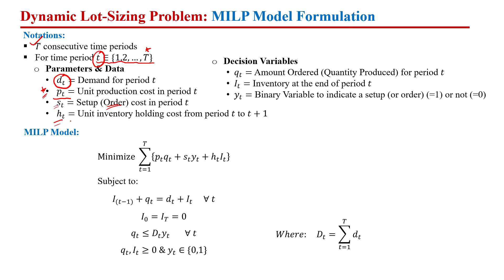h_t represents the holding cost per unit per time period — the cost of carrying inventory from one time period to another. At the end of any particular time period we may have leftover units, which is the inventory held at the end of that period.